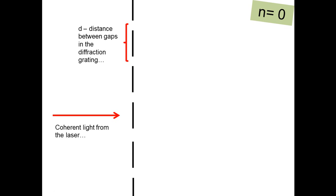D would be the distance between the gaps within the diffraction grating. Now you've got coherent light coming from a laser, so coherent means that it's got a constant phase difference between different parts of the light that's not changing, and that will allow superposition to occur.